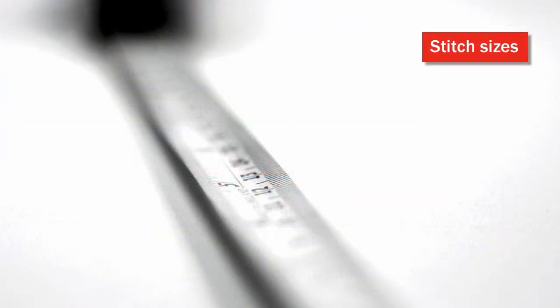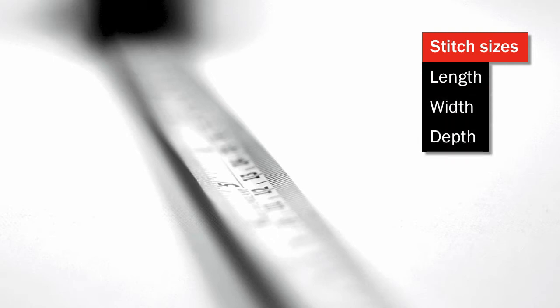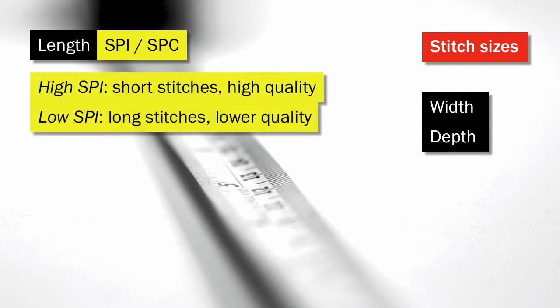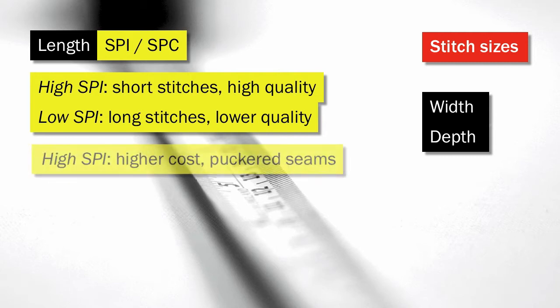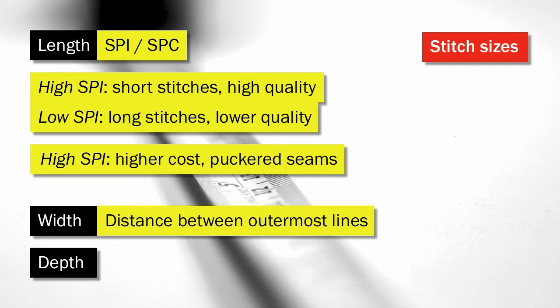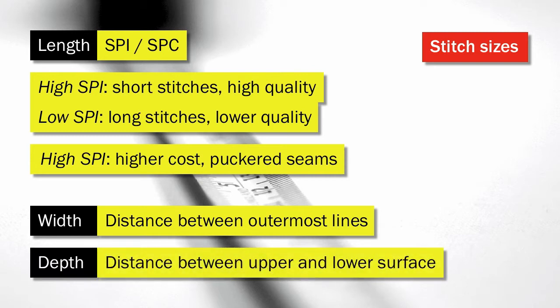Stitches vary according to three different dimensions: their length, width and depth. The length is measured in SPIs, stitches per inch, or SPCs, stitches per centimetre. A high SPI means short stitches resulting in a stronger, better quality formation. However, the higher the SPI, the more thread used and the higher the cost. A high SPI can also pucker seams, which weakens fabric. Stitch width is the distance between the outermost lines of stitches, and depth is the distance between the upper and lower surface of the stitch.